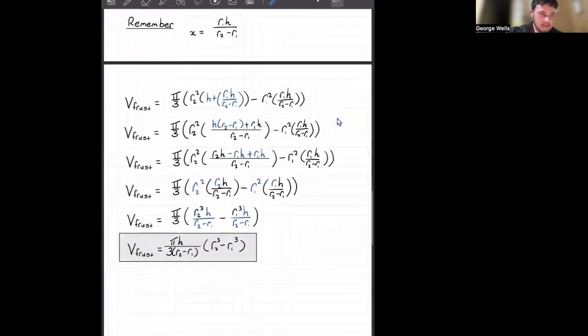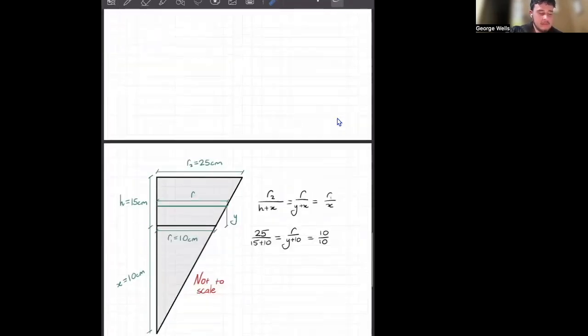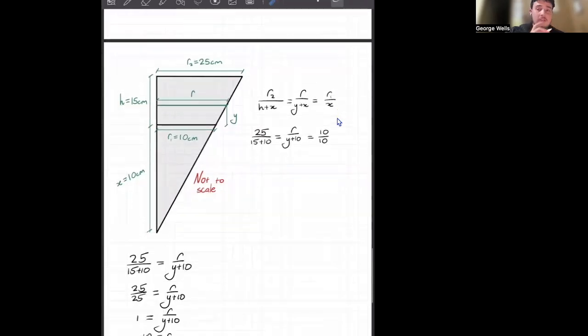There's a decent amount of stuff. From here, we're going to now try to calculate what our y and r are going to be equal to. We're going to go back to our similar triangles.